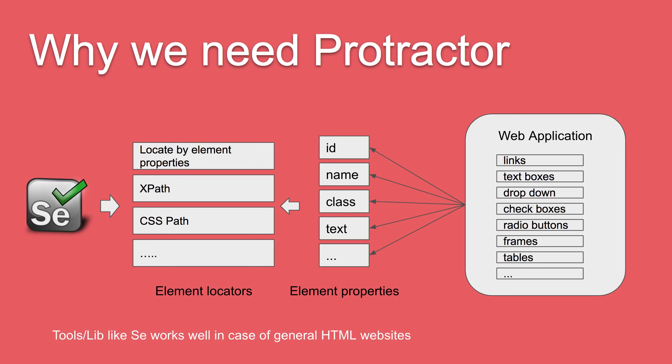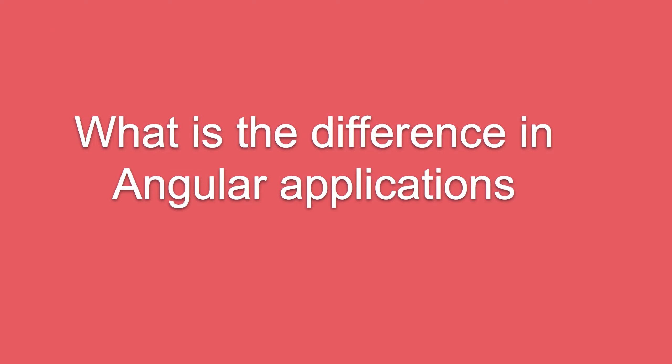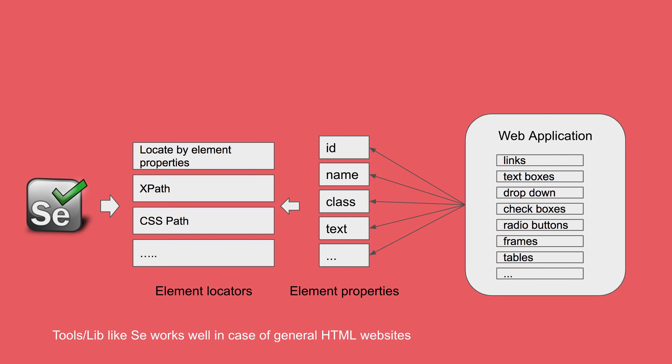All this works fine in the case of general HTML websites. However, what is the difference in Angular applications? In Angular applications, there are some additional properties specific to Angular, like ngRepeater, ngController, ngModel, and so on — also called AngularRepeater, AngularModel, etc. These are extra properties which can be used to identify objects in Angular applications.